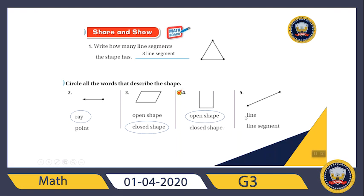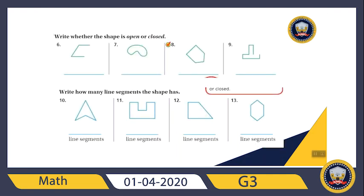How about this — is it a line or a line segment? We said that a line which has end points is a line segment. It's a line segment. Perfect, let's go to the next one.